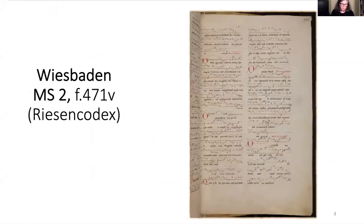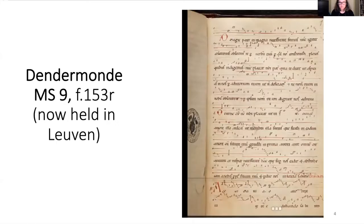All three approaches use the melodies as they appear in the two main Hildegard sources: the Riesen Codex and the Dendermonde manuscript, which was completed at Rupertsberg and sent in the 1170s, before Hildegard died, to the monks at the Cistercian Abbey of Villers.